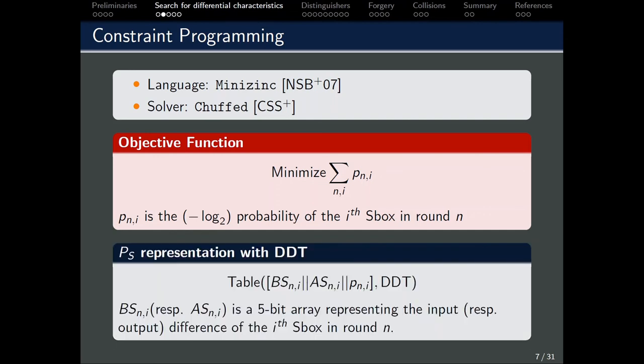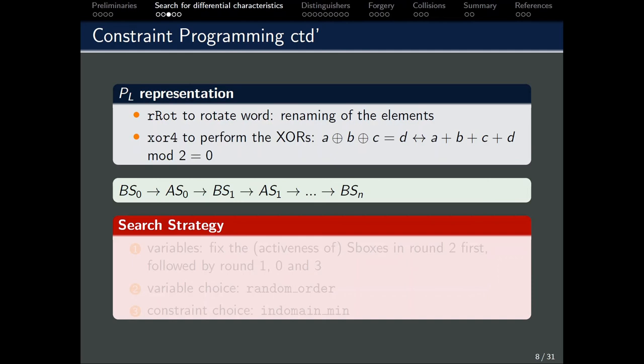To represent the individual S-boxes in the substitution layer, we employ a table constraint for each of them. The table in this case, DDT, contains all the possible transitions from every input difference. The first parameter in this case, we will have to choose from one of the possible transitions in DDT. The input difference and output difference, Bs and As, are written as 5-bit arrays instead of the integer values.